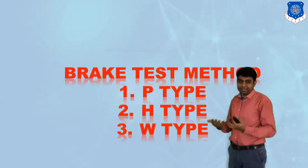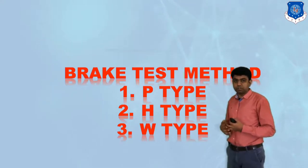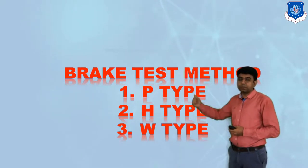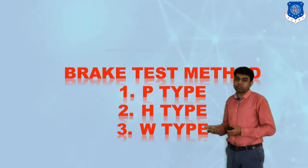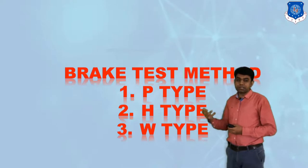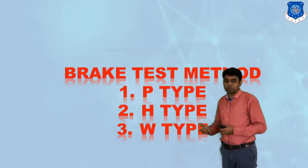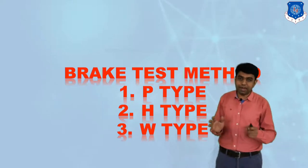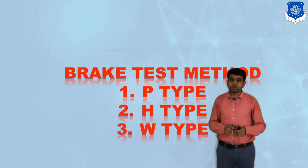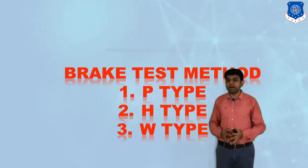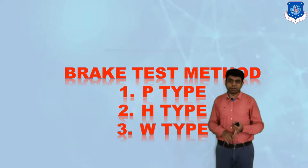In practical application, to ensure how effective the brakes are, we use three different varieties of tests: P-type, H-type, and W-type. P stands for performance, H stands for heat, and W stands for water. Under these three different scenarios, we carry out these tests. To check brake performance, the two most important parameters are the stopping distance and the stopping time.